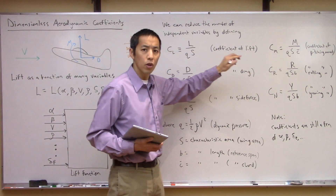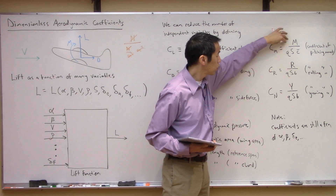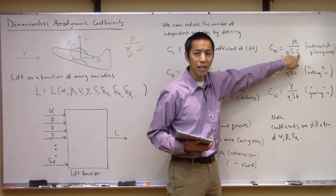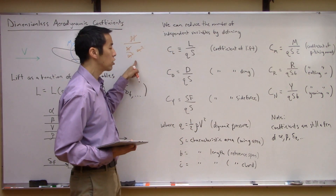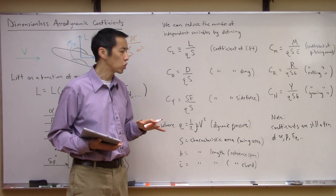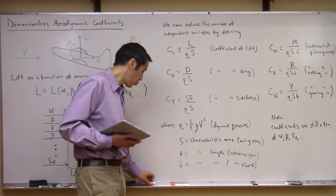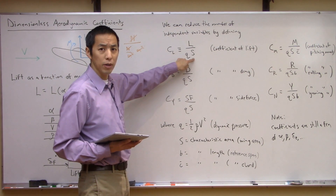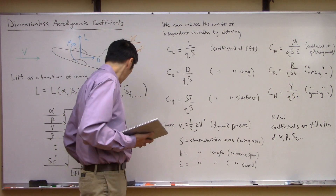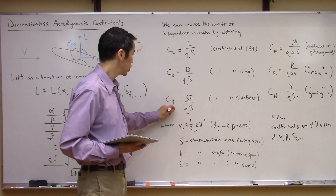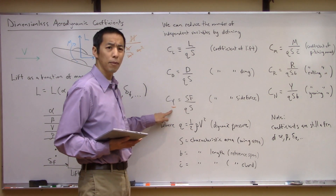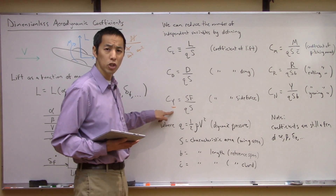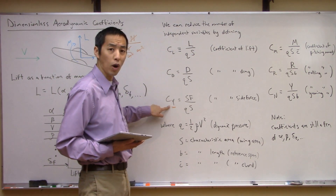The same thing applies to moments. The moments are normalized by dynamic pressure, some characteristic area, and some characteristic length. You do the same unit analysis and they all cancel out, giving you a dimensionless coefficient. For the coefficients of force: you'll typically see CL for lift, CD for drag, and CY for side force — note that CY is side force, which can be a little confusing.